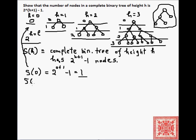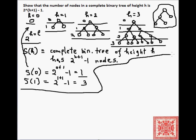We can also easily verify it for S(1): this is 2 to the 1 plus 1 minus 1, which equals 3. And yes, the complete binary tree of height 1 has 3 nodes. So the base case has been shown to be true.